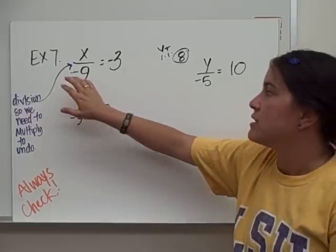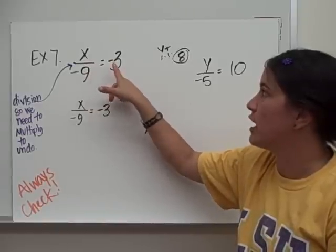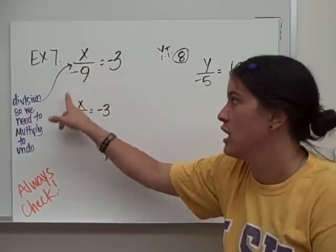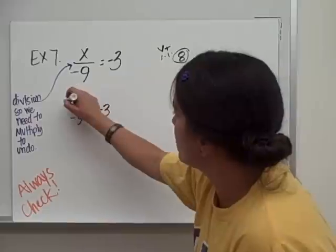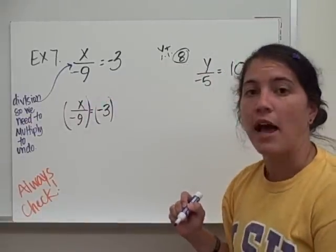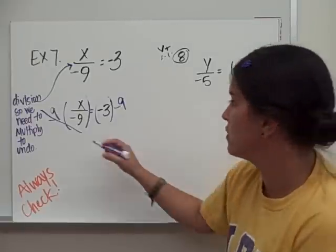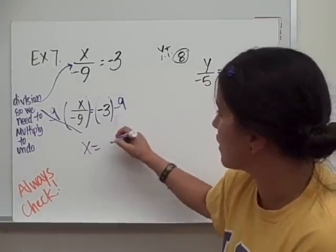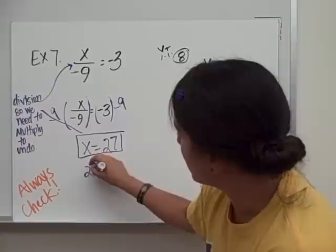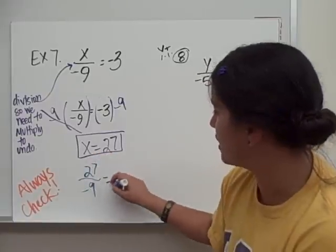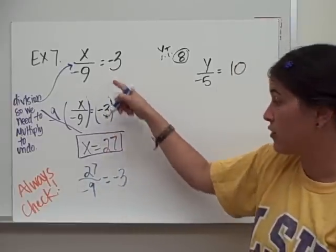The last set of examples are division equations. Example 7: x divided by negative 9 equals negative 3. This is division — a fraction bar is division. So we multiply both sides by negative 9 to undo the division. The 9s cancel out, and negative 3 times negative 9 is positive 27. Checking: 27 divided by negative 9 is negative 3, which is what we want. It checks out.